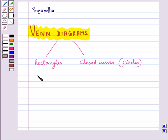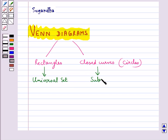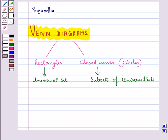The universal set is represented by rectangles and its subsets are represented by circles. In Venn diagrams, the elements of the set are written in the respective circles.